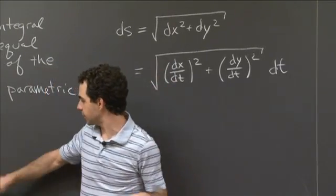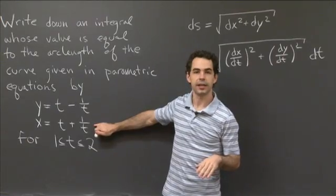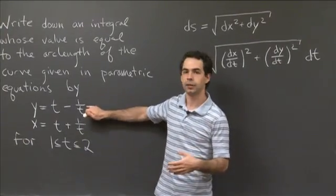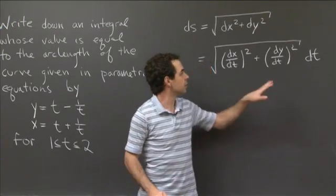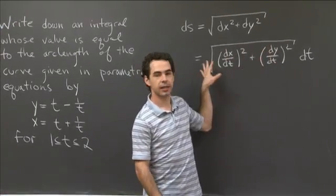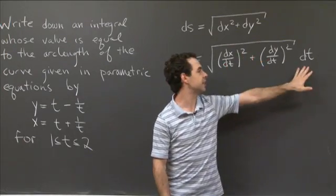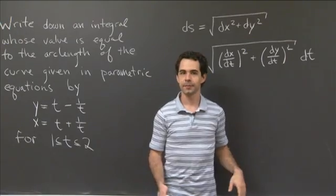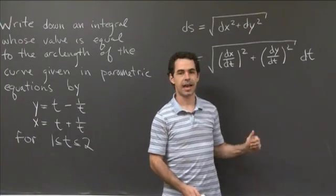And what this gives me is an expression that - x is a function of t, x is given as a function of t right here. So dx/dt is a function of t. And similarly, y is given as a function of t. So dy/dt is a function of t. So this whole expression is a function of t. So we have a function of t dt, so it's all set up to be integrated.